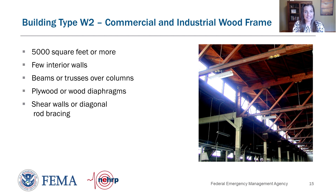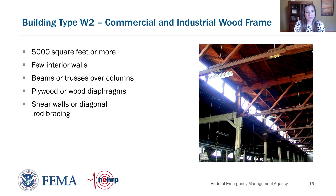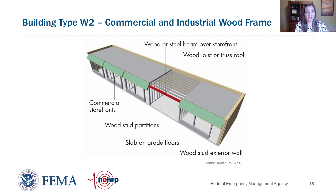The other type of wood frame building is the large frame building, W2, most often used for large industrial or commercial buildings. Distinguishing features include floor area greater than 5,000 square feet, large open interior spaces, and heavy timber beams or trusses supporting a long-span roof. The walls might be sheathed with plywood, stucco, or wood siding, and the roof with plywood or wood planks. There could also be diagonal bracing in the walls using wood or steel braces.